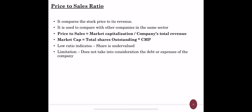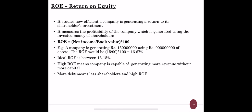Return on equity studies how efficiently a company is generating a return from shareholders' investment. It measures the profitability of a company generated using shareholders' invested money based on equity shares. ROE equals net income divided by book value, multiplied by 100. The ideal ROE is between 13 to 15 percent, meaning a company should earn at least 13–15% from its shareholders' equity. High ROE means the company is capable of generating more revenue without more capital and debt. However, more debt means less shareholding and a higher ROE, so the mixture of debt and equity should be justifiable.